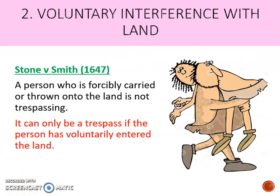Requirement two is that the interference with the land has to be voluntary on the part of the defendant. In Stone v Smith (1647), it was said that a person who is forcibly carried or thrown onto the land is not trespassing — it can only be a trespass if the person voluntarily entered the land. For example, if a child is pushed by a friend into someone's front yard, it would be unfair to find that child guilty of trespass, as they did not enter the land voluntarily.